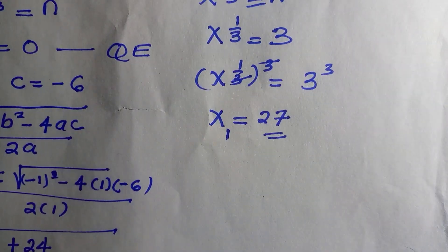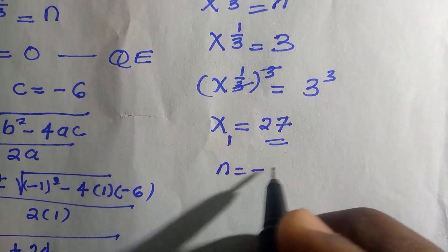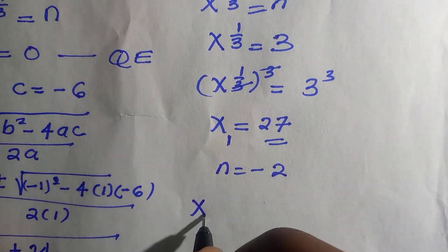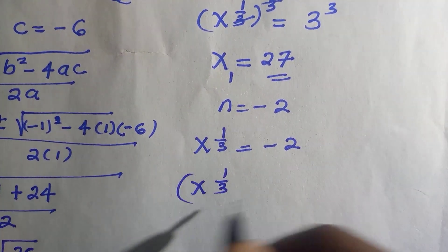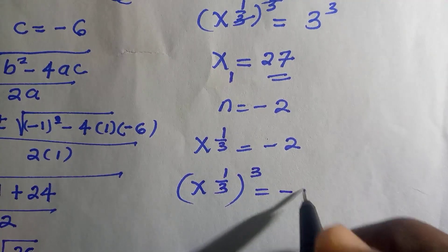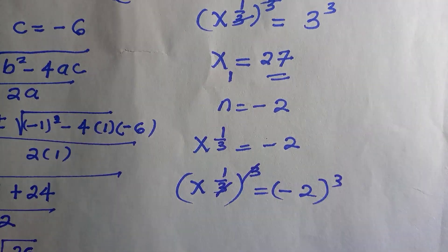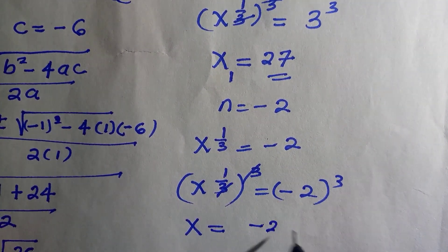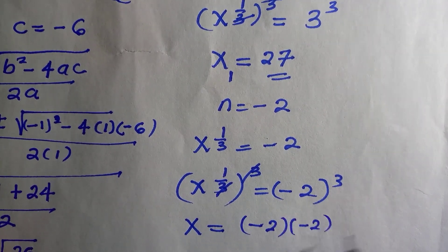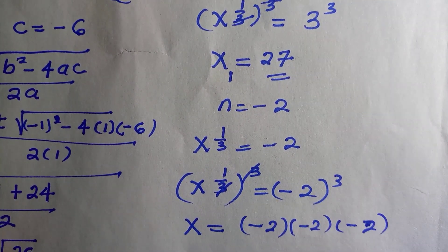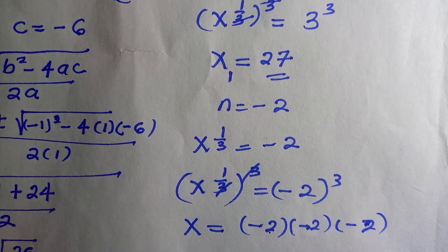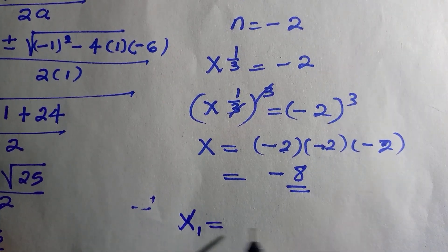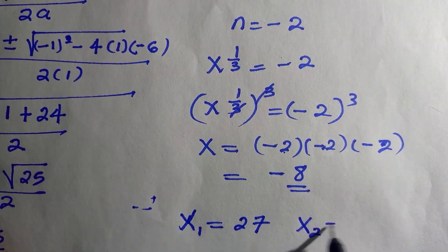Now let's check for when n equals negative two to find the second value of x. We have x to the power of one-third equals negative two. Applying the same method, we cube both sides: x equals negative two cubed, which is negative two times negative two times negative two. Negative times negative is positive, giving four, and four times negative two is negative eight. So the second value of x is negative eight.